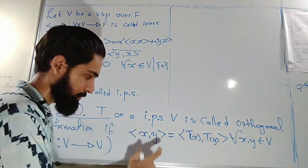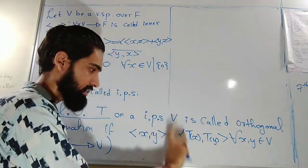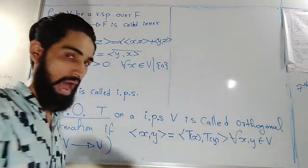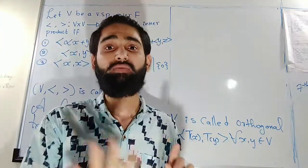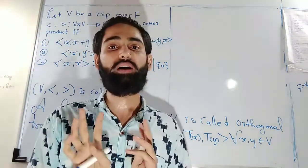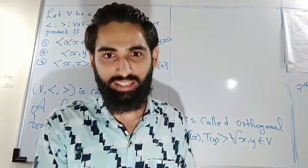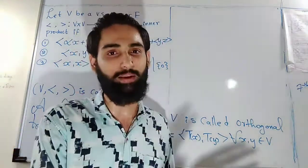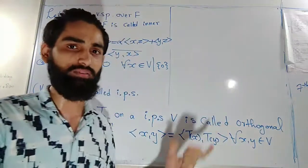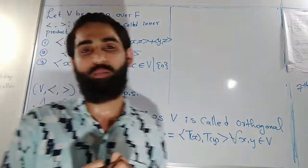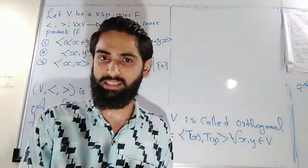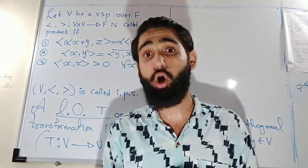If it preserves the inner product, that means inner product XY is same as inner product of TX, TY. After applying the transformation, still the inner product is same. Hence, inner product XY is same as inner product TX, TY. So this is the simple definition of an orthogonal transformation.